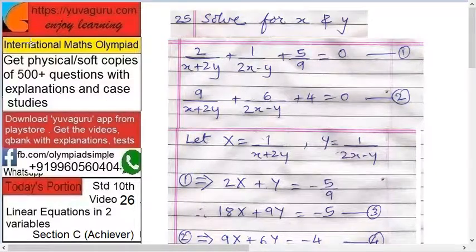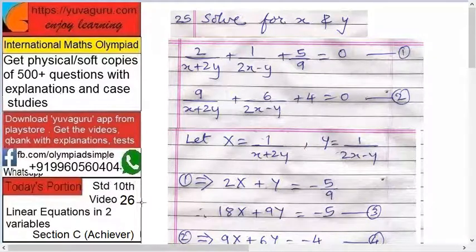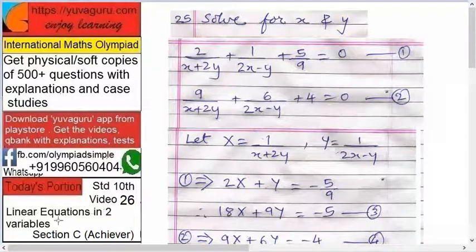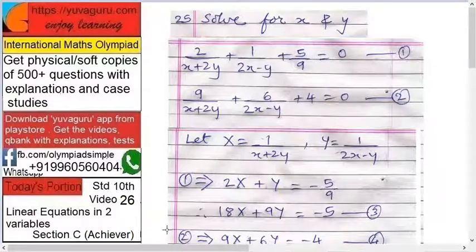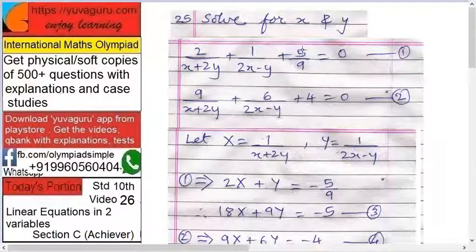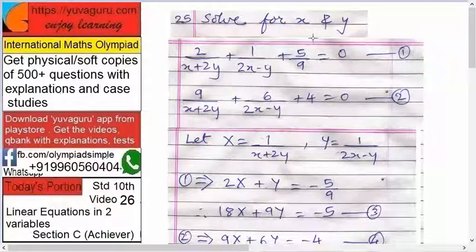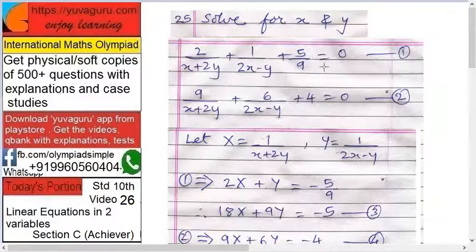Hi friends, welcome to International Math Olympiad videos, standard tenth video number 26, linear equations in two variables section C, achiever toughest one. Solve for x and y, quite a difficult problem. Now you should try this yourself also.